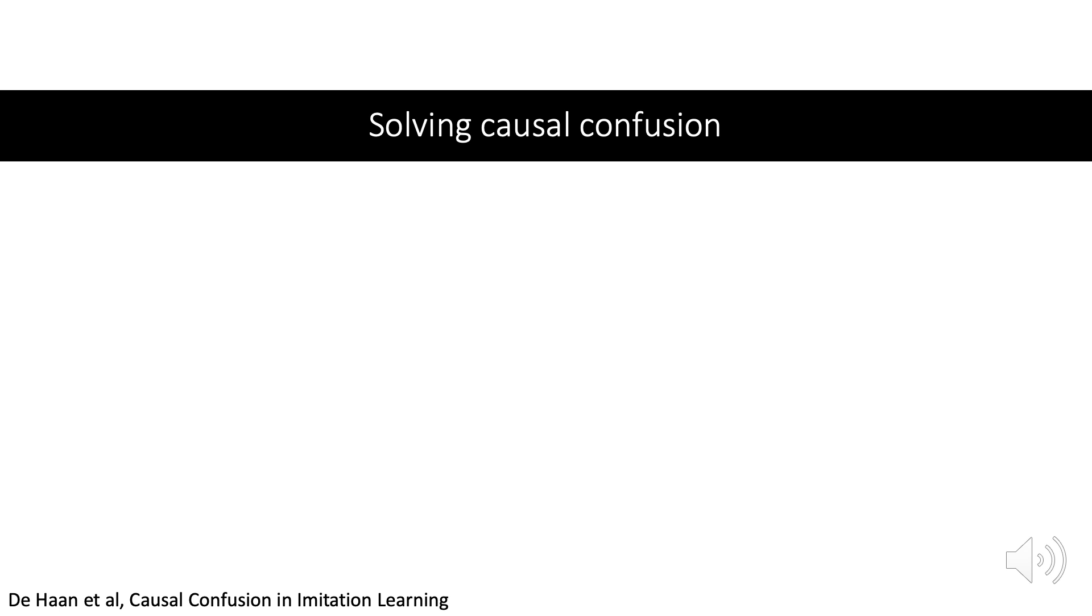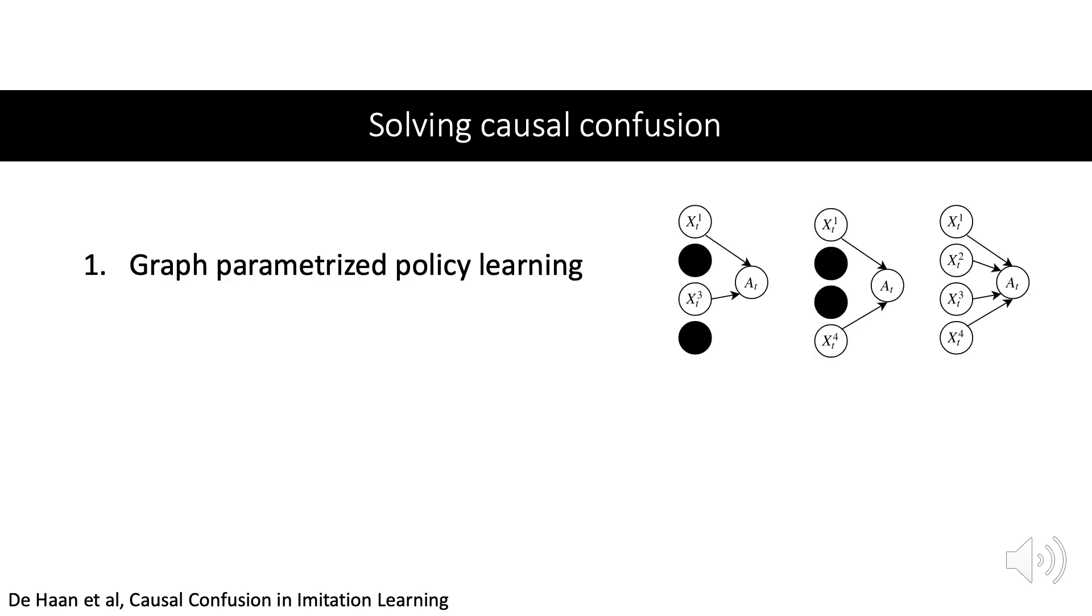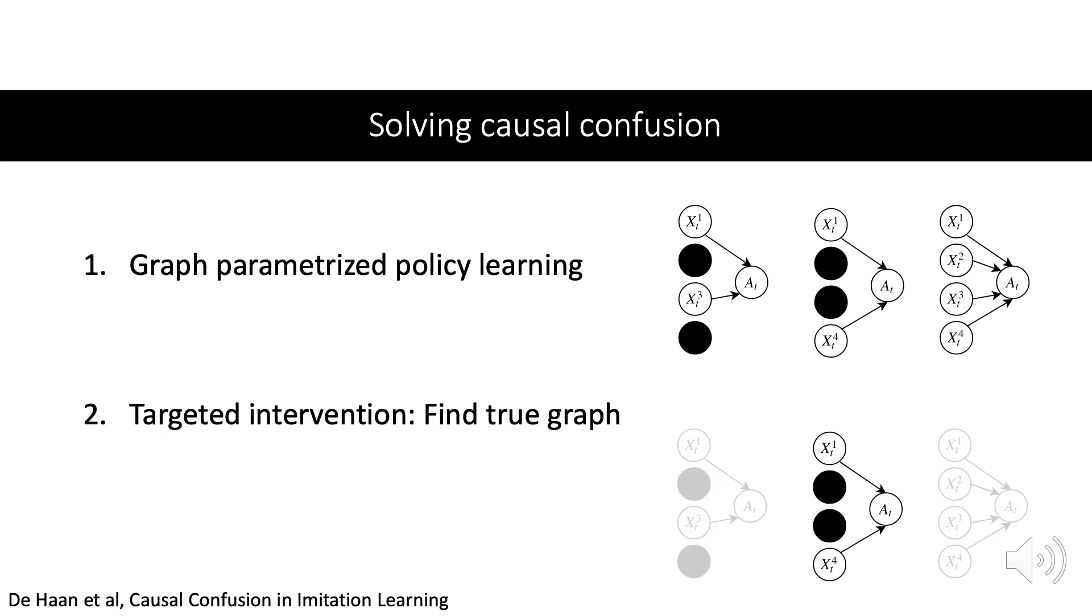So how might we find the true graph out of all possible graphs? We do this in two phases. First, we learn an optimal policy for each causal graph. Then we perform targeted intervention to find the best causal graph by interacting with the environment.